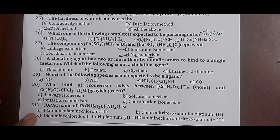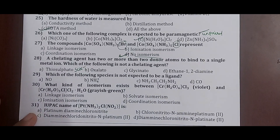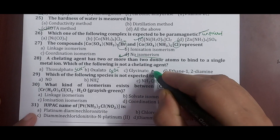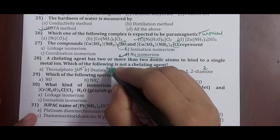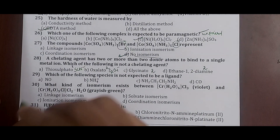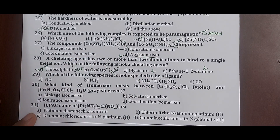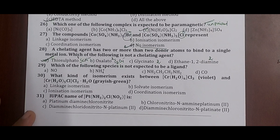Question 28: a chelating agent has two or more donor atoms to bind to a single metal ion. Which is not a chelating agent? Thiosulfato (SCN⁻) has one donor site — monodentate, cannot chelate. Oxalato, glycinato, and ethane-1,2-diamine all have two donor sites. Since thiosulfato is monodentate, it cannot act as a chelating ligand. Correct answer: option A.